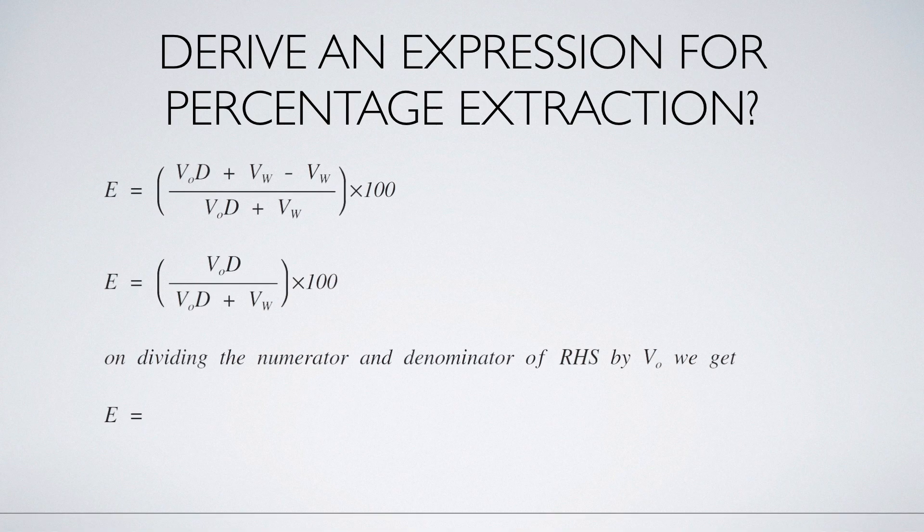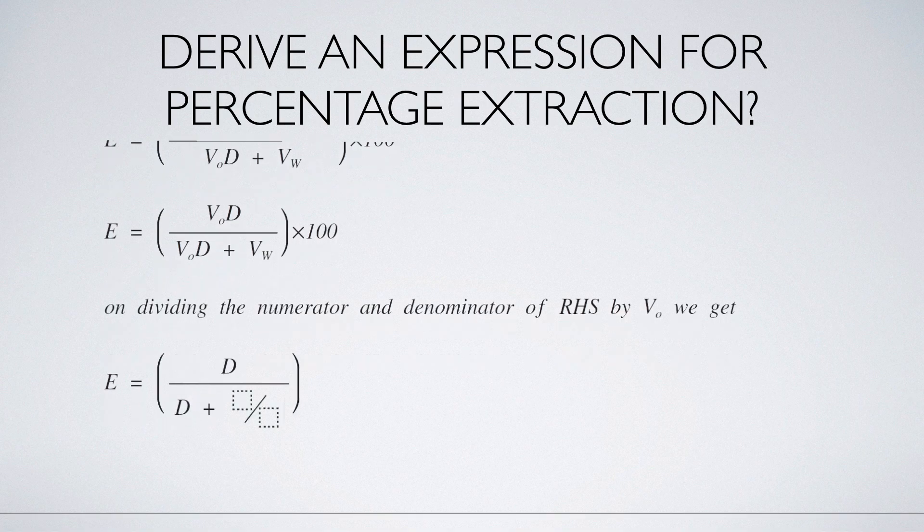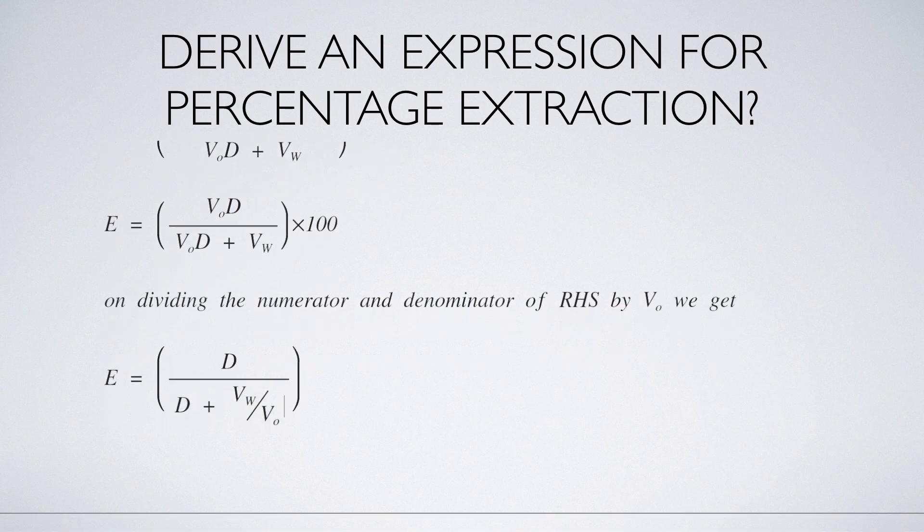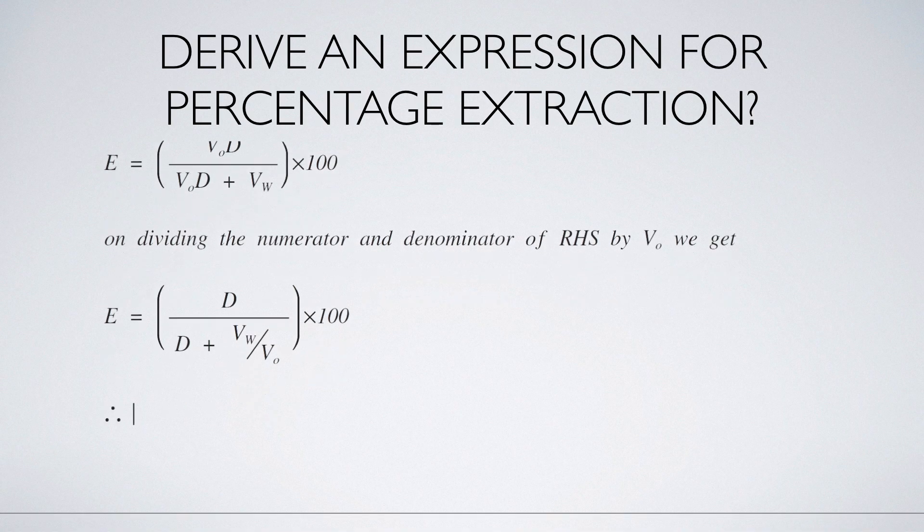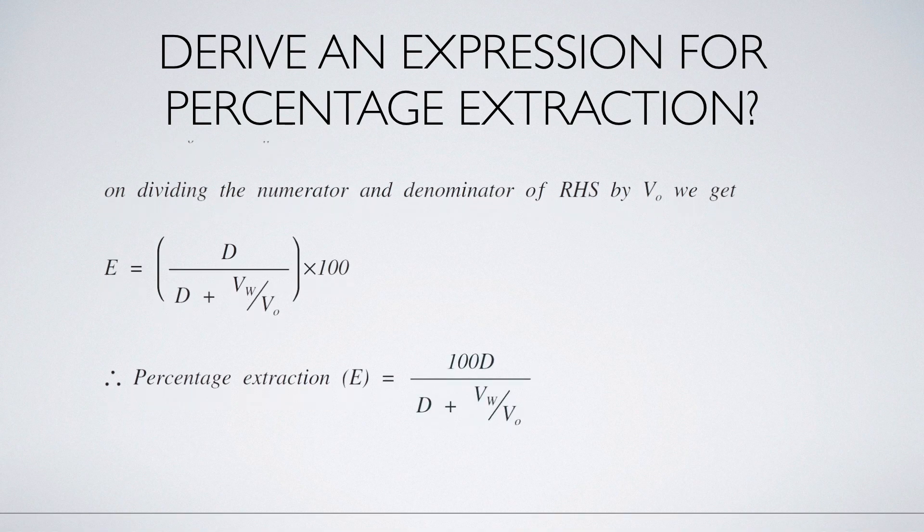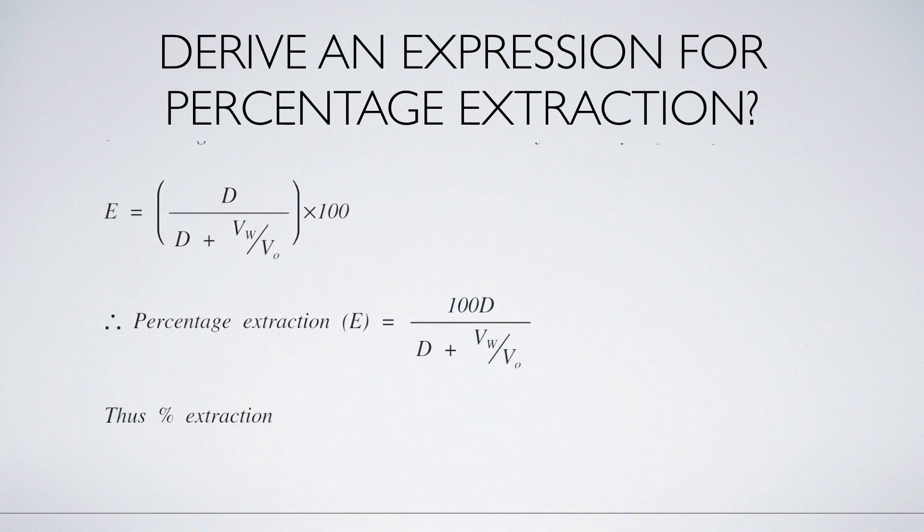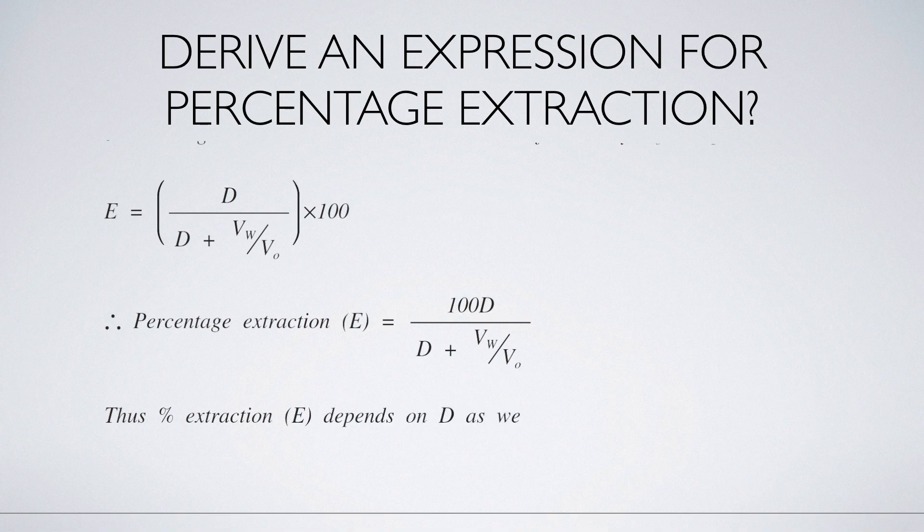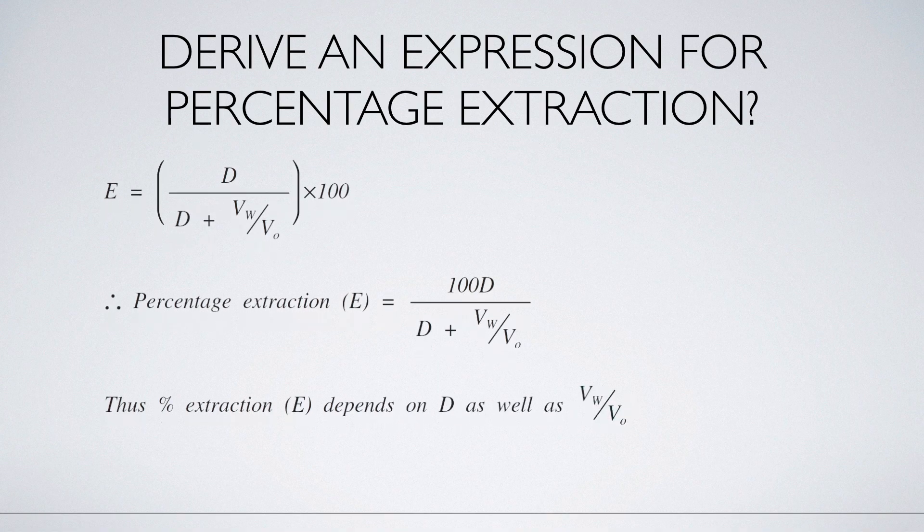We get E equals D divided by D plus VW by VO into 100. Therefore, the percentage extraction E equals 100D divided by D plus VW by VO. Thus, percentage extraction E depends on D as well as the ratio of VW by VO.